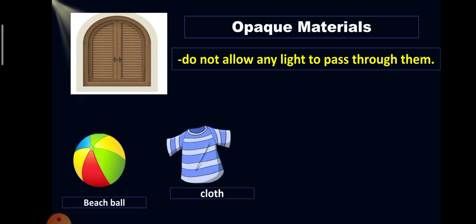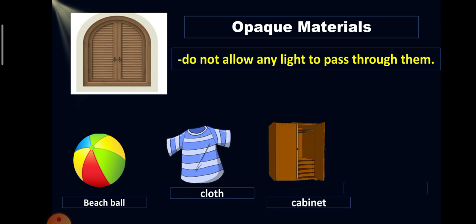Opaque materials do not allow any light to pass through them, just like this wooden window. Other examples of opaque materials are beach ball, cloth, cabinet, and bag.